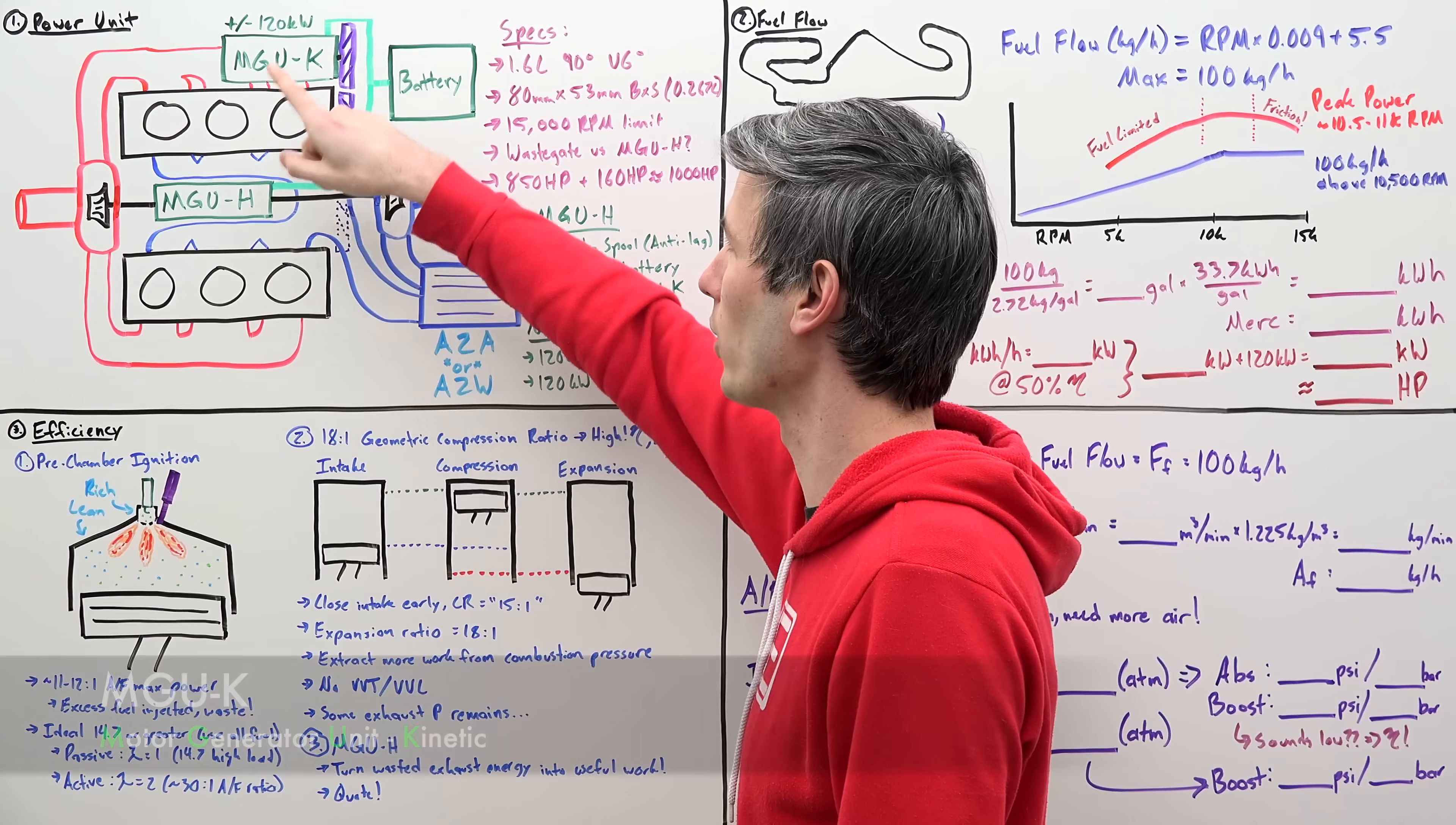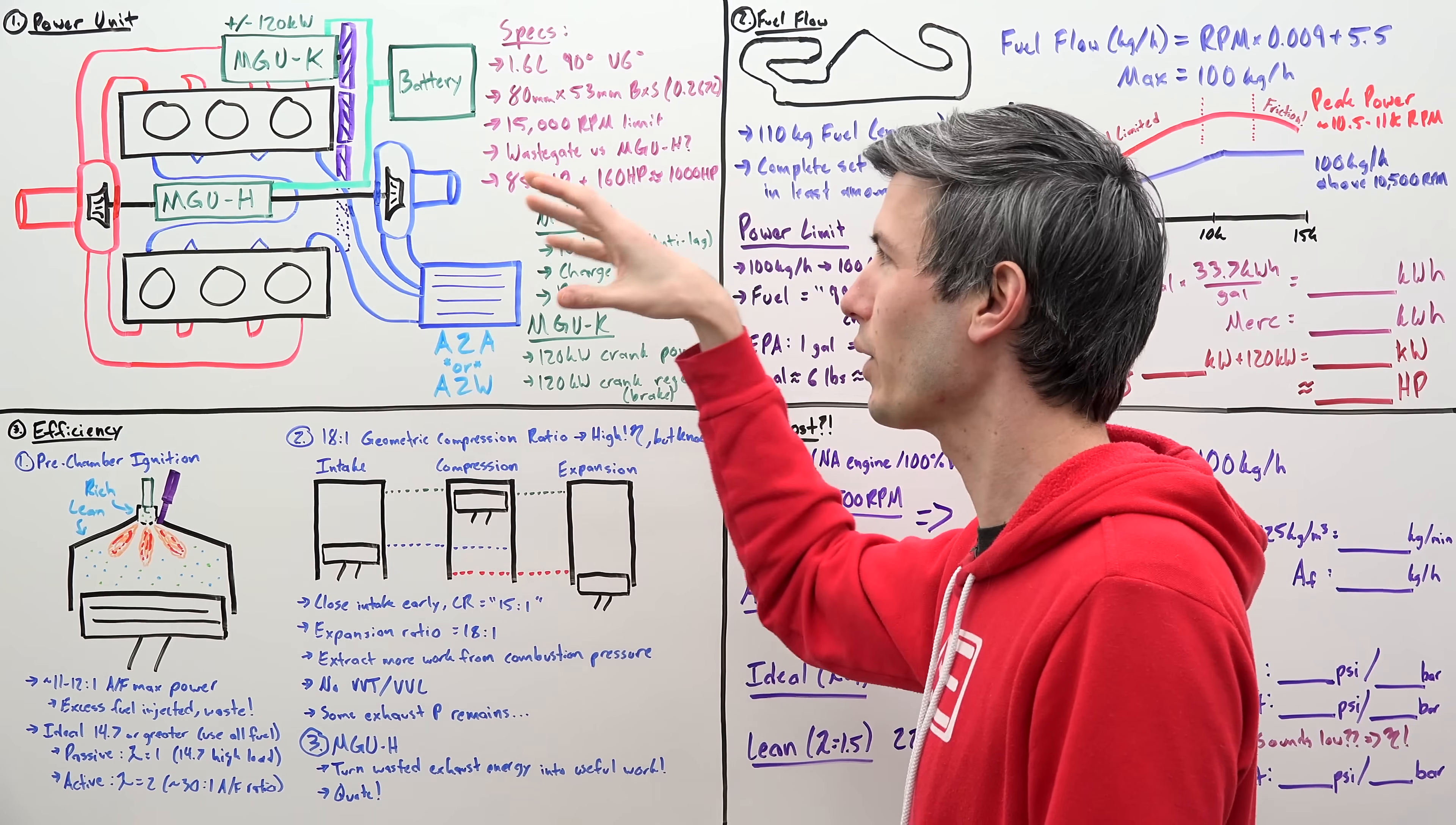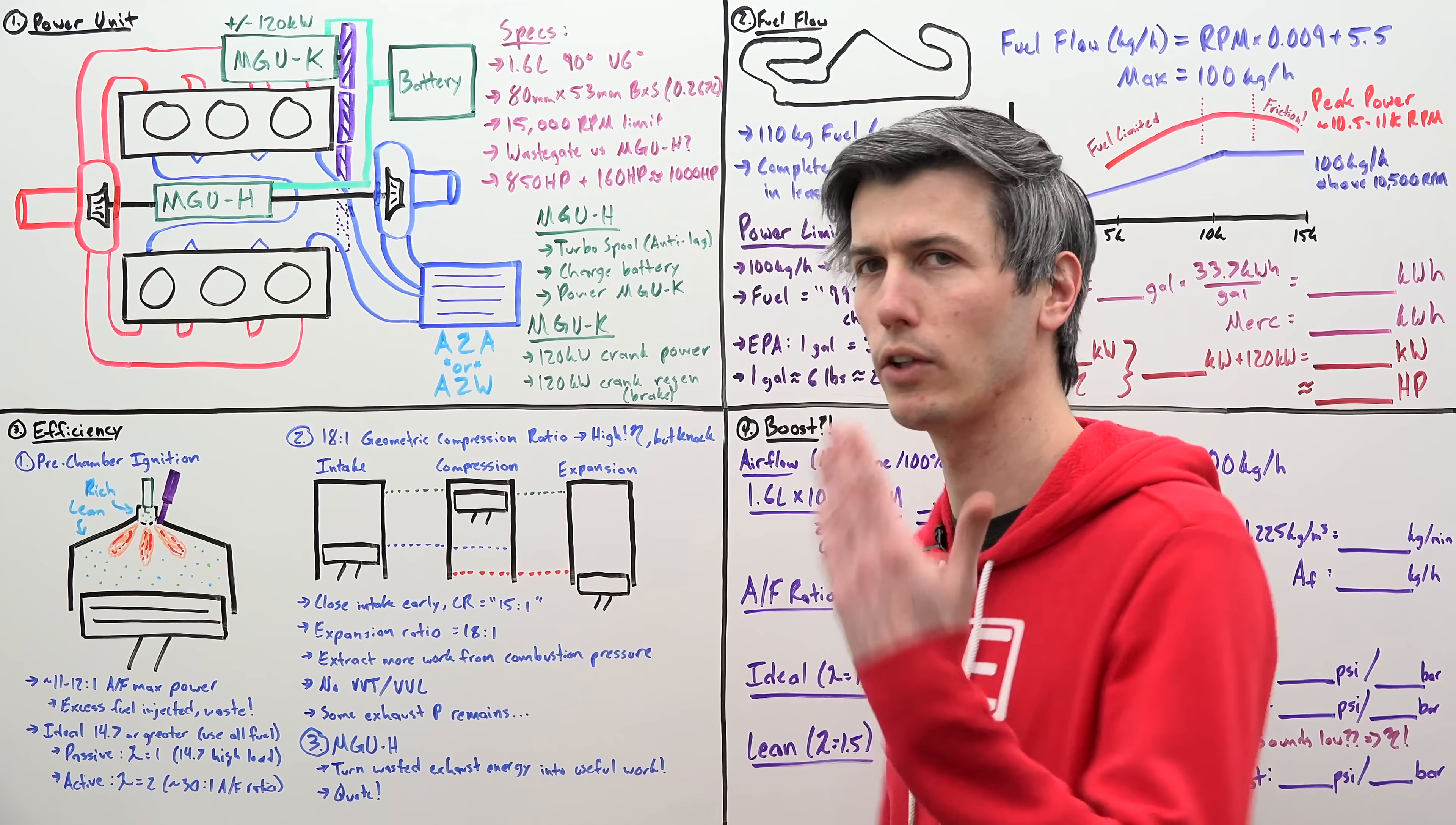We'll get into why later on in the video. So we have two clever additions to this Formula One power unit. They're both electric motors, one of which is called an MGU-K, which is directly linked to the vehicle's crankshaft, and one of which is called an MGU-H, which is directly linked to the turbocharger shaft. And so as you can imagine, if you have a turbocharged engine, as you start to create more exhaust gases, you start to produce more boost, which means you create more exhaust gases, which means you create more boost, and that just runs away. You have to have a solution to this.